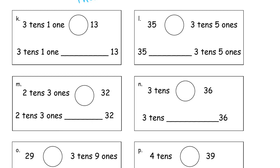3 tens 1 one. That's going to be 31. 31 is a lot more than 13. You see the same digits, it's a 1 and a 3, but it matters where the 3 goes and where the 1 goes. So 3 tens 1 one is greater than 13.